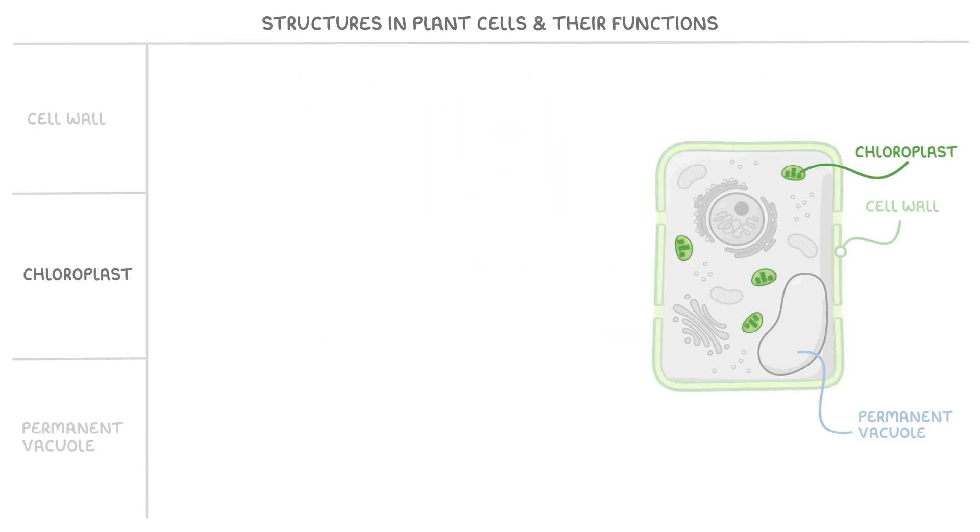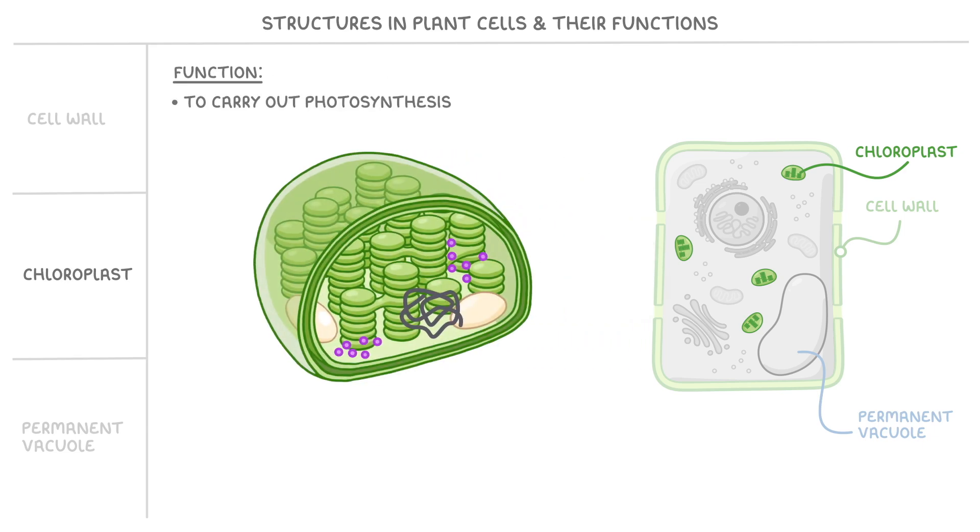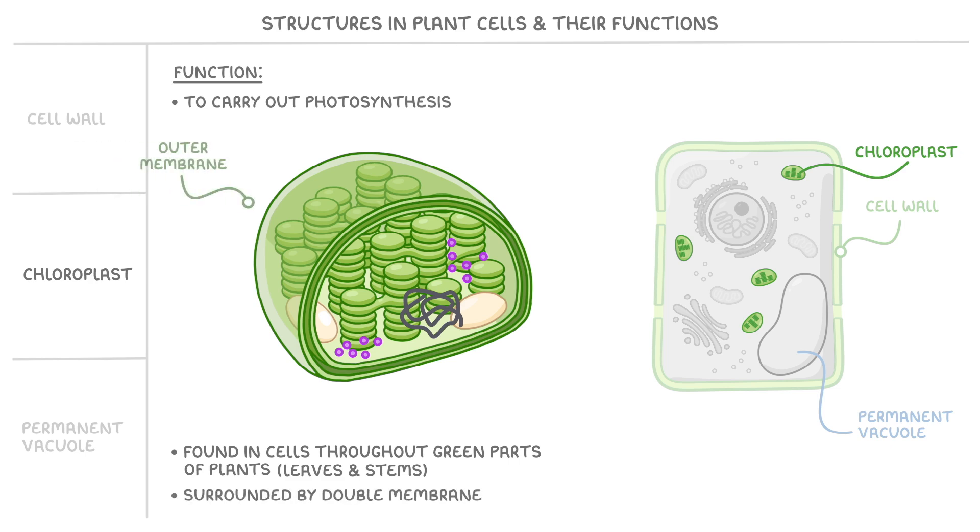Next let's look at chloroplasts, whose function is to carry out photosynthesis. The organelles themselves are green, and they're found in cells throughout the green parts of the plant, like their leaves and stems. Each chloroplast is surrounded by a double membrane, an outer membrane here and an inner membrane here. Moving inwards, they've got a fluid called stroma within which we find fluid filled sacs called thylakoids. The thylakoids are then arranged into stacks called grana, and remember a single one of these grana is called a granum.